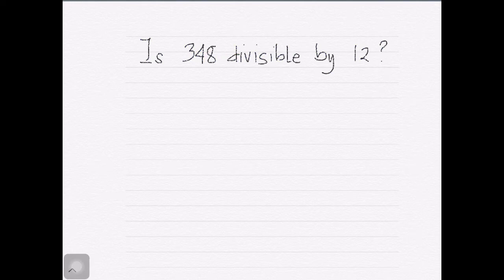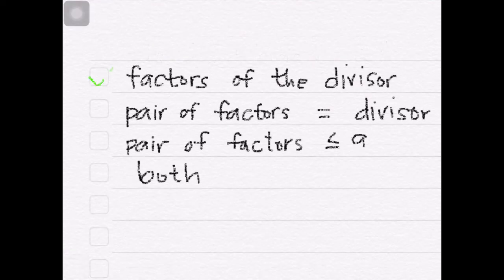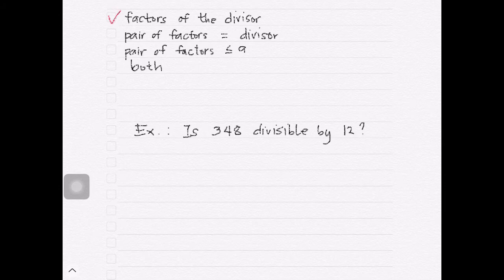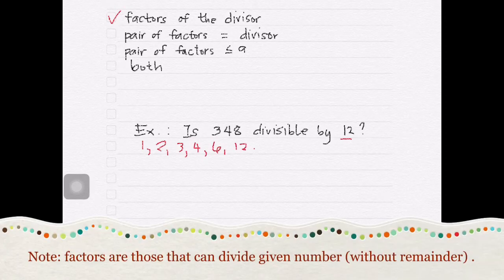Is 348 divisible by 12? To answer that question, we have to consider all four items on the checklist. In this case, the divisor is 12. The factors of 12 are 1, 2, 3, 4, 6, and 12. Though we can have negative factors, this video only discusses and considers positive factors.